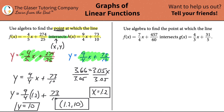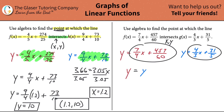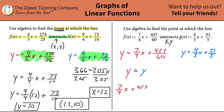Now let's do the second example. Use algebra to find the point at which these two lines intersect. First, rewrite each with y instead of f(x). The red equation becomes y equals 7/4 x plus 457/60, and the blue becomes y equals 4/3 x plus 31/5. Since they're intersecting, they share a common x and y, so we set red y equal to blue y: 7/4 x + 457/60 equals 4/3 x + 31/5.